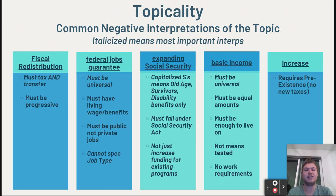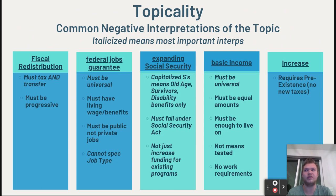On fiscal redistribution, we have the must-tax-and-transfer interpretation, and also the argument that it has to be progressive — the tax has to be on the rich and the transfer has to be to the not-rich. For the federal jobs guarantee, there are lots of people who say it must be universal — any American anywhere who wants a job has to be able to get one — that it has to give a living wage and benefits, that the jobs have to come from the government, and there is an important interpretation that the affirmative plan cannot specify what type of job.